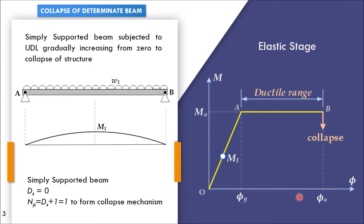Our experiment takes the load from 0 up to collapse, gradually increasing it. Starting with an initial small value W1, the bending moment is also small and lies in the elastic range, say M1. At this particular load W1, the section moment is M1 and it lies in elastic range.